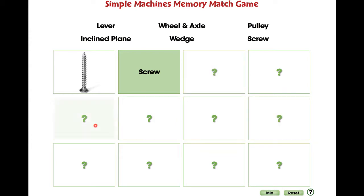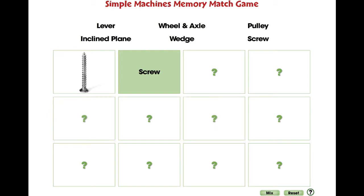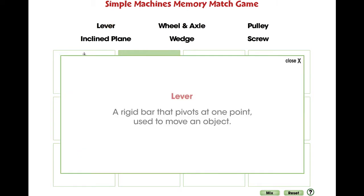Find the hidden pairs in the puzzle. Touch a card to reveal a different simple machine, then find its matching word or image.